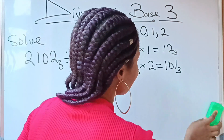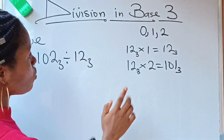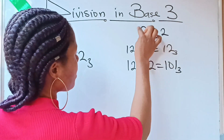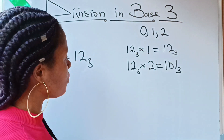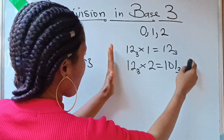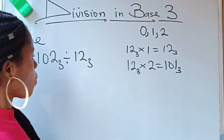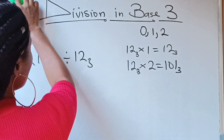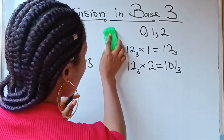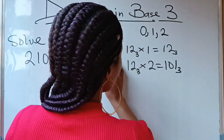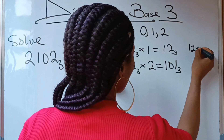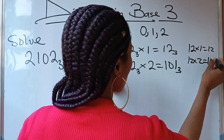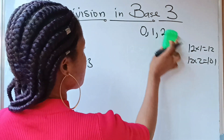So our times table is: 12 times 1 gives us 12, and 12 times 2 gives us 101 — all in base 3. That is all we need. Now let's use this times table to solve our problem using long division.